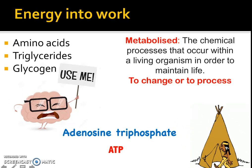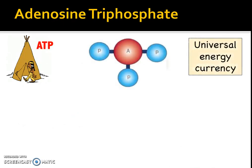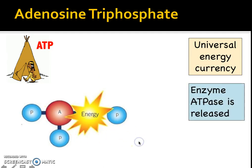Adenosine triphosphate is fundamentally known as the universal energy currency — it's the only form of breakdown that gives us our energy. It's called adenosine triphosphate because you have adenosine — the 'A' — and then three phosphates (tri = three). To create kinetic energy, one of these phosphates breaks away from the adenosine and the other two phosphates, and this breaking away creates the energy we need. The enzyme ATPase is released, allowing this phosphate to be moved away — the whole process is known as an exothermic reaction.